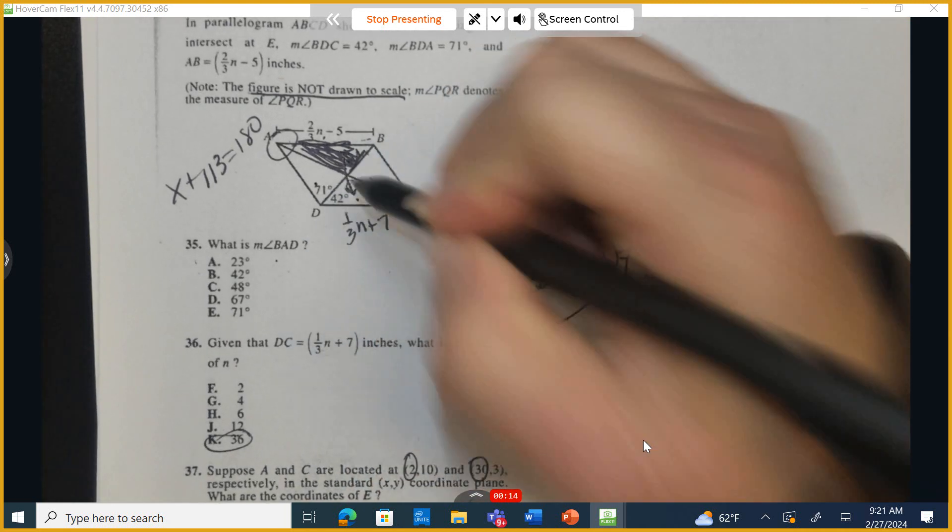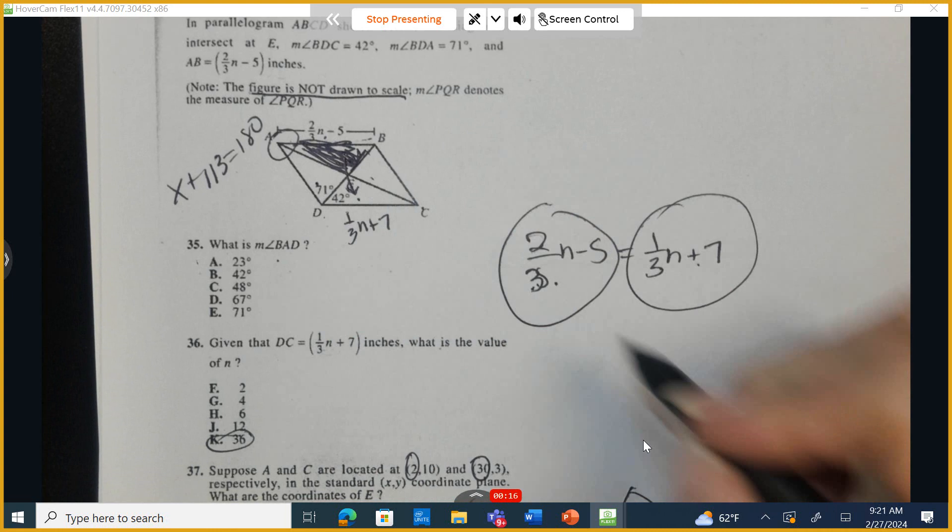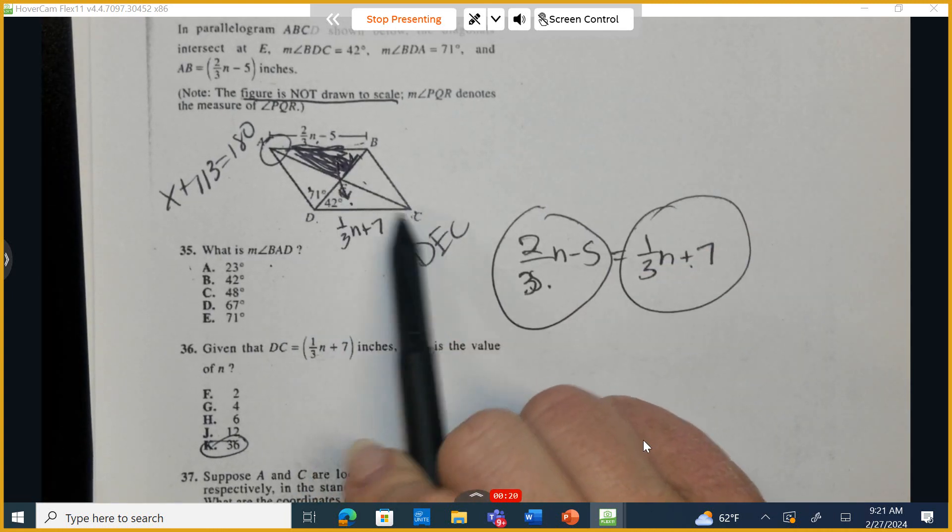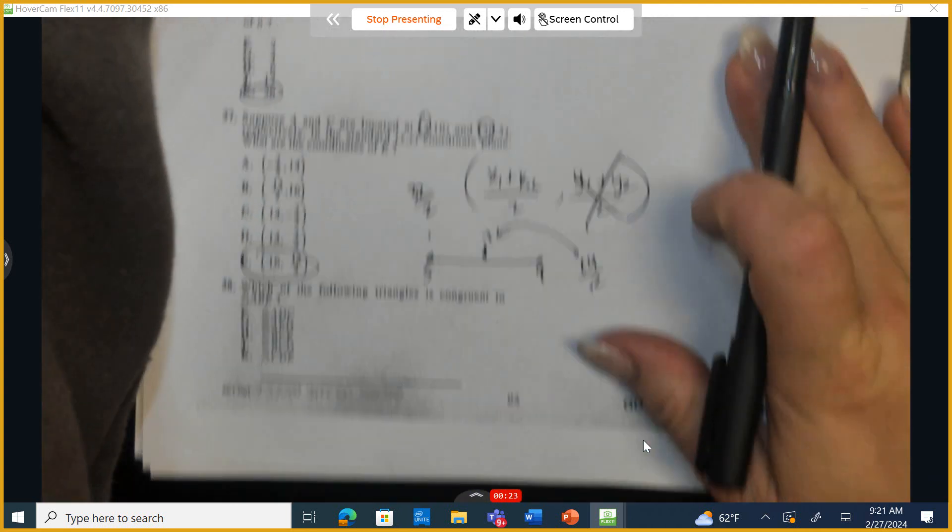It's the one that's diagonal to it, so it's DEC. Now, DEC can be in any order, so it could be like ECD. As long as we have DEC, that will be the correct choice.